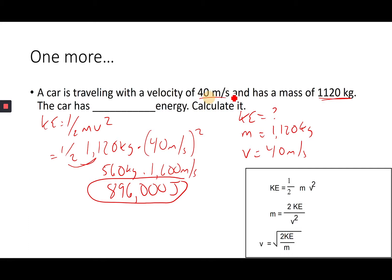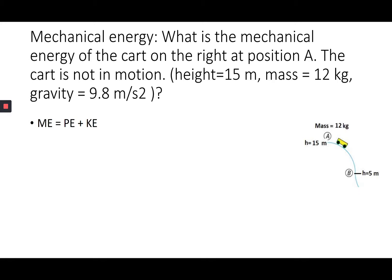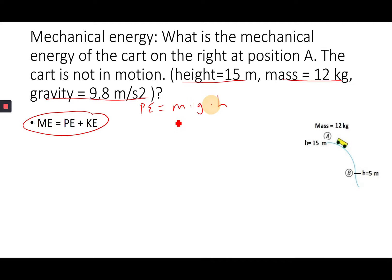Mechanical energy is the combination of potential and kinetic energy. Potential and kinetic are constantly changing — you're transferring one form to another. Example: a cart at a height of 15 meters, mass of 12 kilograms. First find potential energy: mass times gravity times height equals 12 kilograms times 9.8 meters per second squared times 15 meters, which equals 1,764 joules.